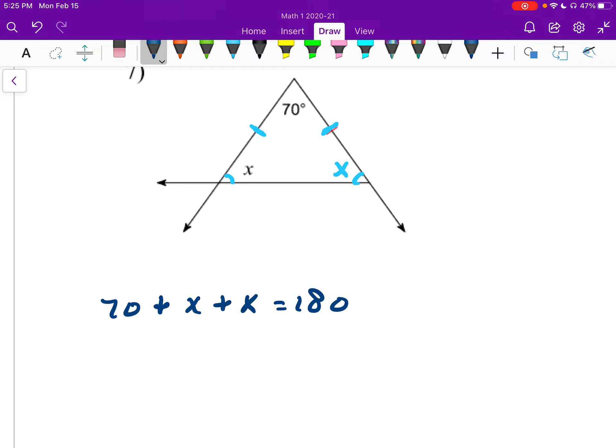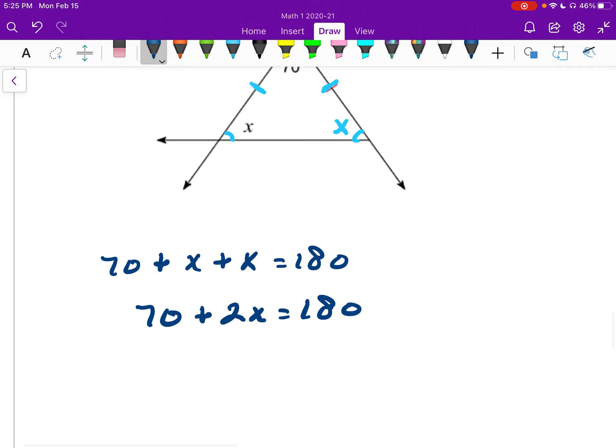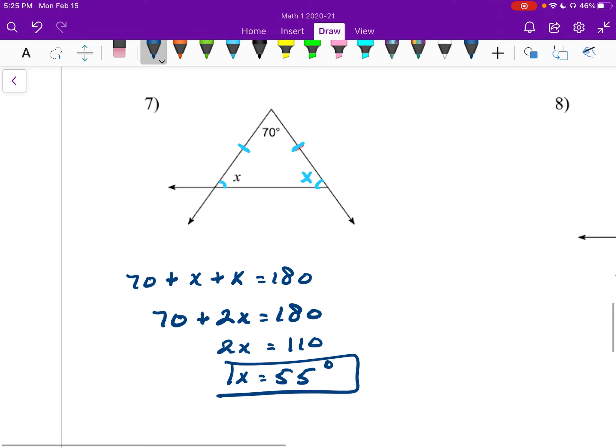Now I can combine like terms on the left, put my x's together, and I'm going to get 70 plus 2x is 180. I subtract my 70, and I get 2x is 110, and x is 55. So that one is a little bit different. Make sure you know how to do those. Whenever you have to add the x in there, you add them all together. You combine your like terms and solve. From there, it should be pretty easy.